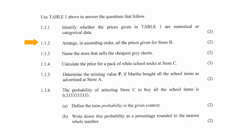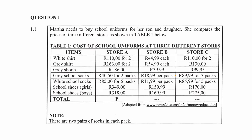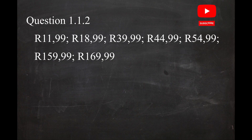In question 1.1.2, you are instructed to arrange all the prices given for Store B in ascending order. Ascending order means that you have to arrange the data from the lowest value to the highest value. The arrangement will look like this.